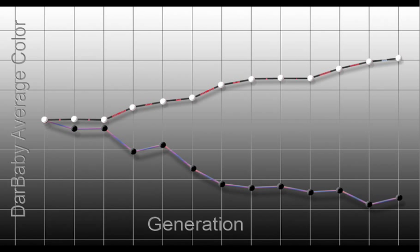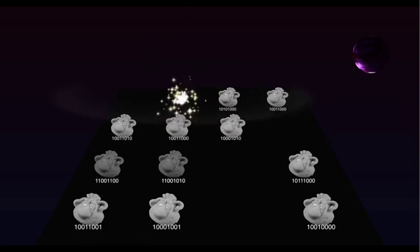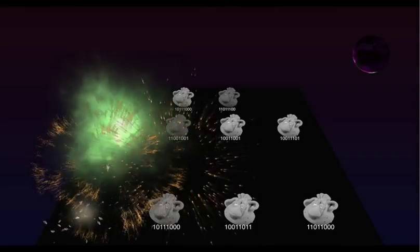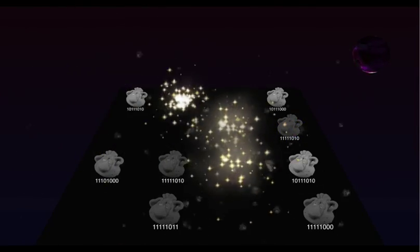Notice how the evolution is not smooth. Sometimes evolution appears to stop. Other times it moves fast. It can even go backwards. Yet over time, the net effect is a directed process, making the organisms more fit for their environment. The element of misfortune — unlucky Darbabies dying without regard to their fitness — is an example of genetic drift, the other prime ingredient in the mechanisms of evolution.